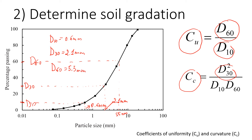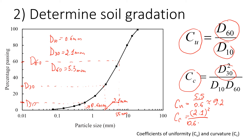Now we calculate both coefficients. The coefficient of uniformity Cu equals d60 divided by d10, so 5.5 divided by 0.6, which gives approximately 9.2. The coefficient of curvature Cc equals d30 squared divided by d10 times d60, so 2.1 squared divided by 0.6 times 5.5, which gives approximately 1.34.